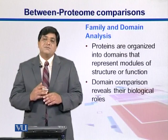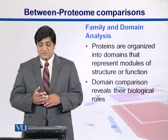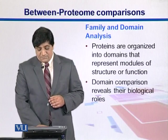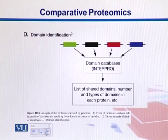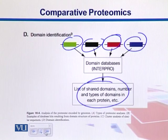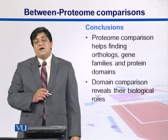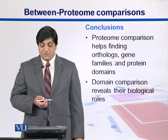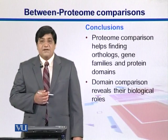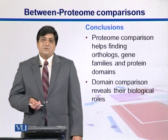Proteins are organized into domains — specific arrangements of amino acids that represent structural units. Domain comparisons are sometimes correlated with biological functions. We take domains from different proteins, put them into domain databases, and identify shared domains present in different groups, then correlate this information to get an idea about their functions. Overall, proteome comparison helps in finding orthologs, gene families, and protein domains, and domain comparisons can also help correlate to biological functions.